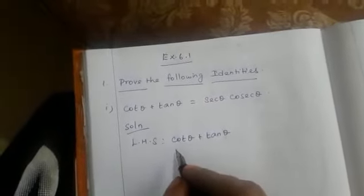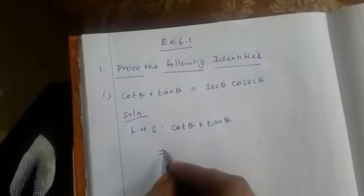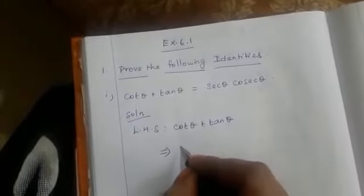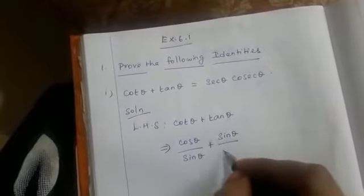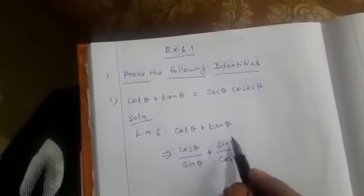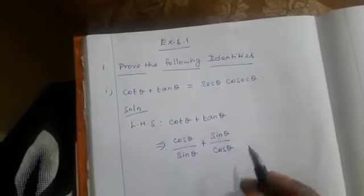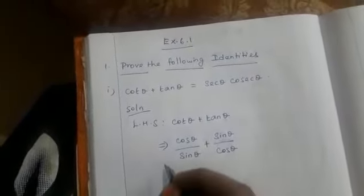In LHS we have cot theta plus tan theta. Let us write cot theta as cos theta by sin theta, plus tan theta as sin theta by cos theta. We are just changing cot theta and tan theta in terms of sin and cos.